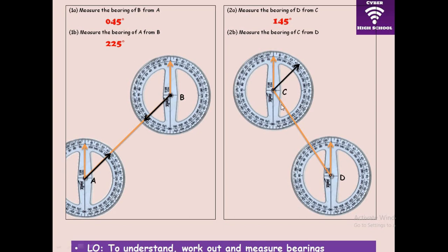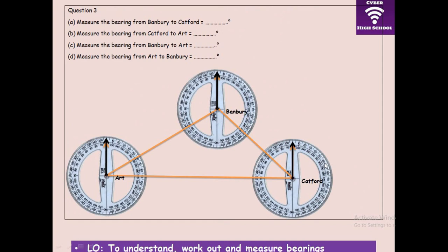Now measuring C from D — this is the angle we are supposed to measure, and it gives us 345 degrees. Sometimes you might find it difficult to measure a large angle like this, so an alternative is to measure the small remaining angle and simply subtract it from 360 degrees to get your answer.